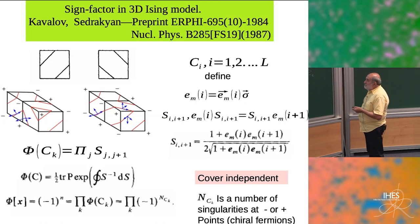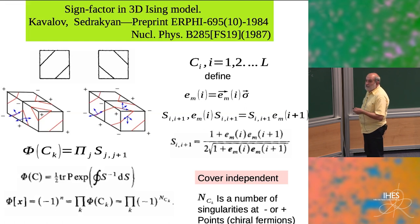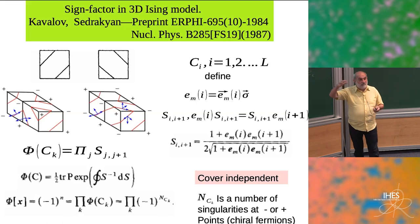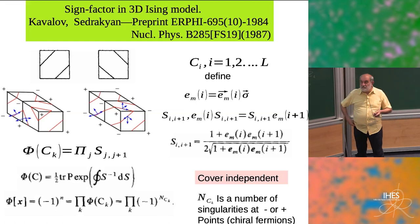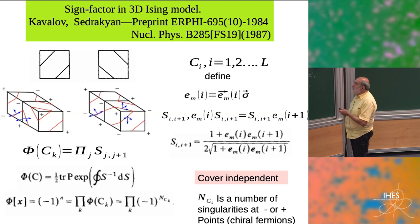Having φ_C for each curve and taking the product of all these factors, you get a sign for the whole surface. You have covered the surface by a set of curves, and then you have a factor corresponding to the surface.